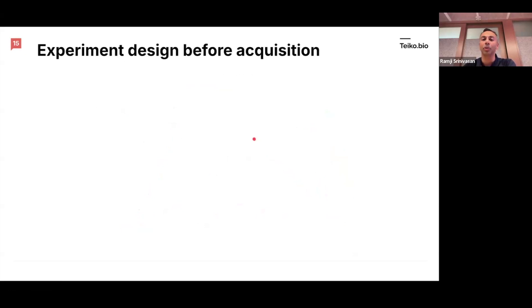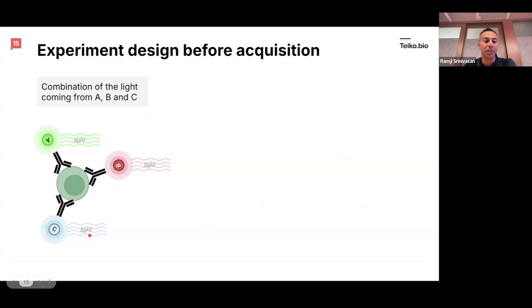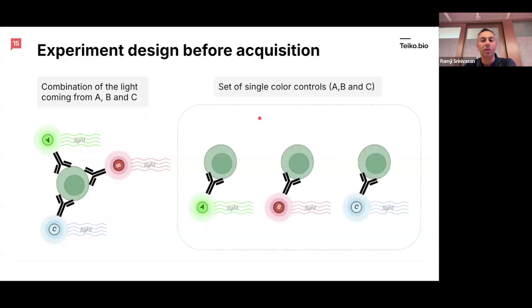And to do that, we're going to show you what the experiment design looks like before acquisition. So before acquisition, you take a cell, and we're going to label A, B, and C, and light is going to be emitted from each of these fluorophores that's going to be picked up by the instrument. And then in parallel, we're going to have a set of single color controls, A, B, and C. So remember, we've got one cell labeled with all three, and one cell labeled with each of these. Readers who might be guessing ahead can figure out that we're going to use these controls to unmix and separate out each one's contribution.